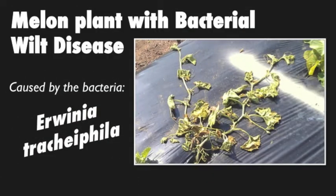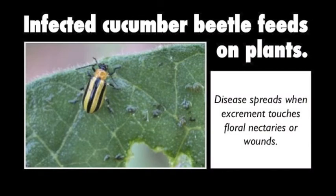With funding from the SCRI, I am researching the interactions between the bacteria Erwinia tracheophylla and the gut of the cucumber beetles. Erwinia tracheophylla causes bacterial wilt, a devastating disease of cucurbit crops in the central and eastern parts of the United States. The disease is spread to cucurbit plants when excrement from infected beetles comes in contact with floral nectaries or through feeding wounds on the plant. Since the disease-causing bacteria passes through the beetle's gut before it infects the plants, we'd like to understand if any interactions between the bacteria and the beetle's gut influence the bacteria's transmission to plants.